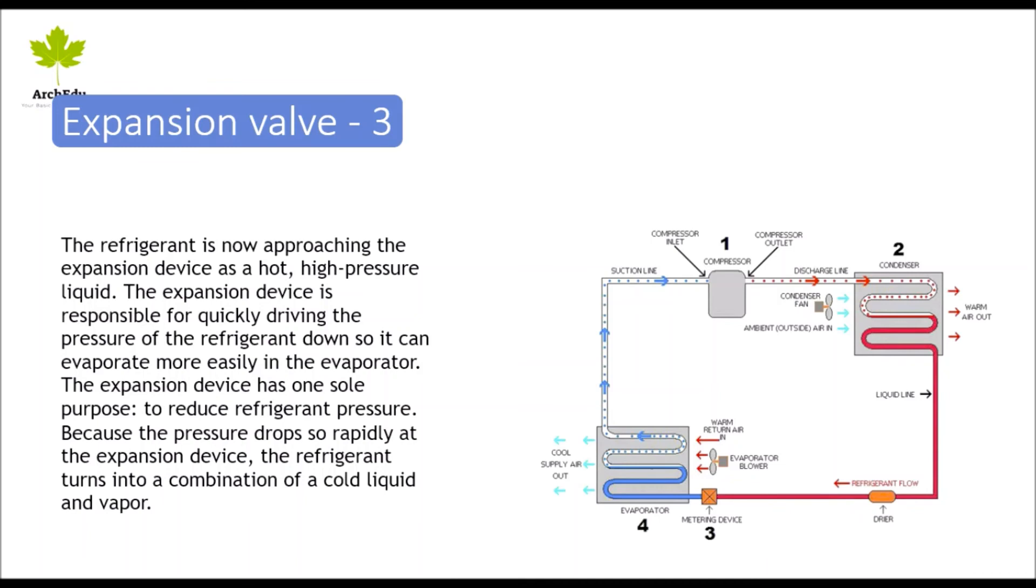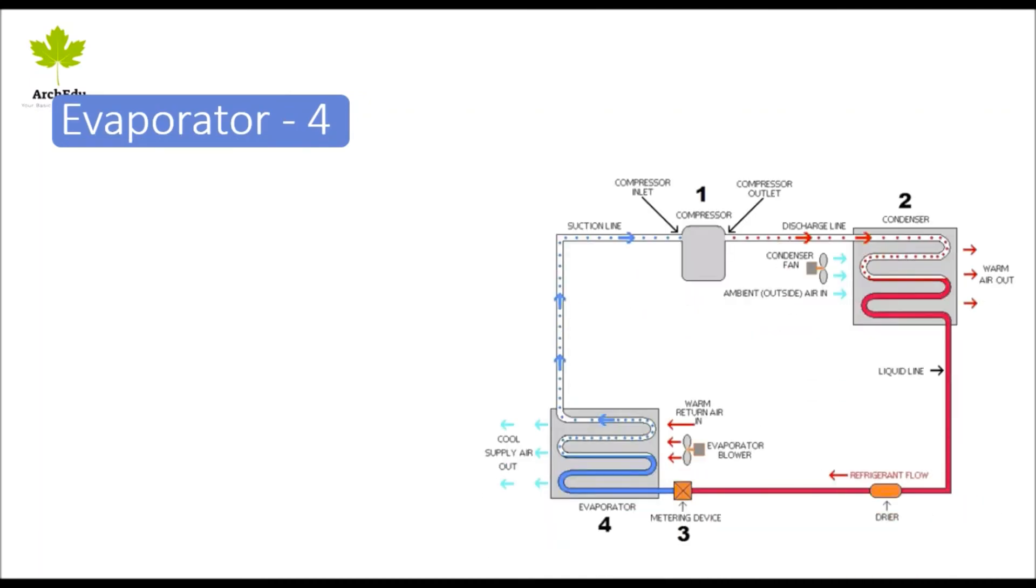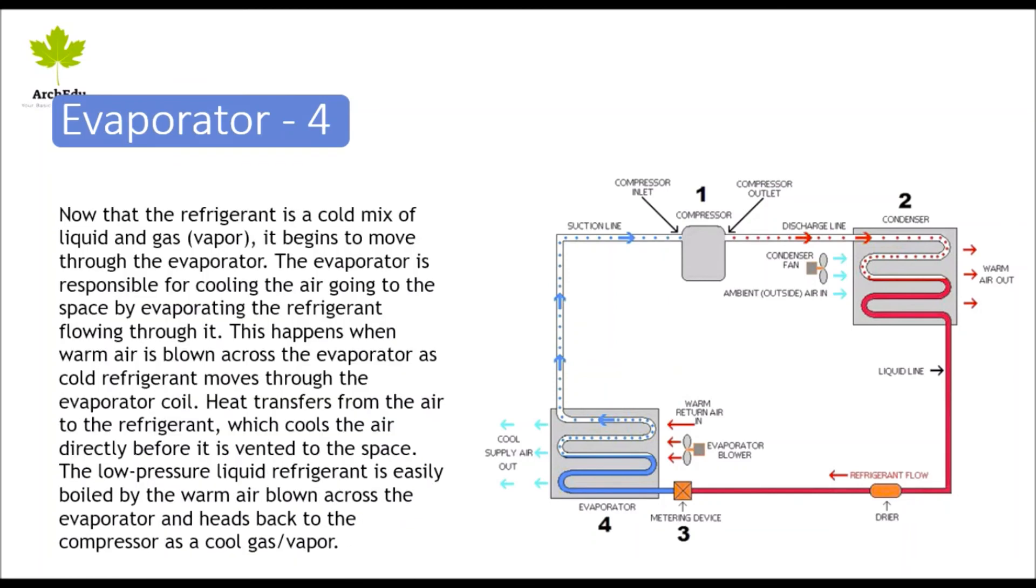Because the pressure drops so rapidly at the expansion device, the refrigerant turns into a combination of cold liquid and vapor. Fourth part: the evaporator. Now that the refrigerant is a cold mix of liquid and gas vapor, it begins to move through the evaporator. The evaporator is responsible for cooling the air going to the space by evaporating the refrigerant flowing through it. This happens when warm air is blown across the evaporator as cold refrigerant moves through the evaporator coil.